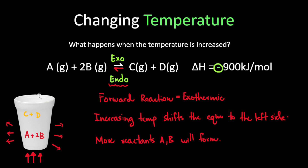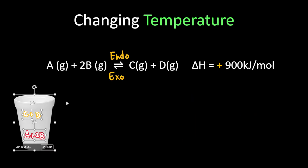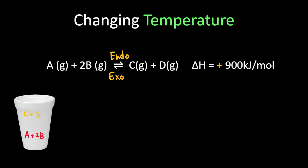Let's bring this example to another place. In this reaction, what we can see here is delta H is positive, meaning that my forward reaction is endothermic, meaning that I'm absorbing heat from the surroundings.